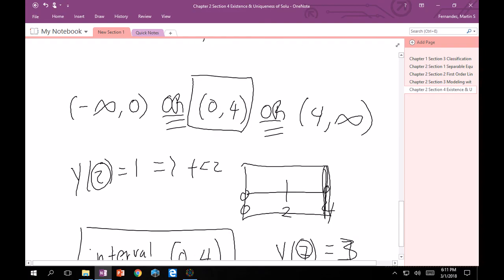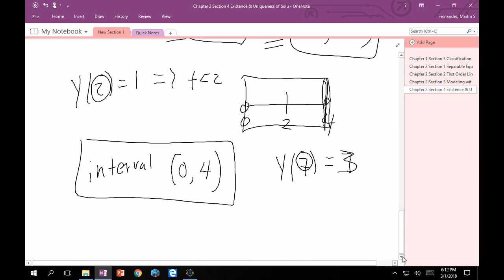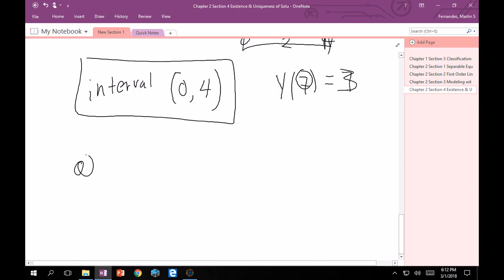So, at y(7) equals 3, we choose interval (4, infinity).